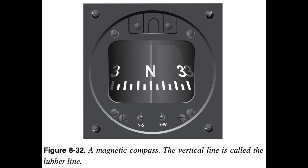The compass housing is entirely full of compass fluid. To prevent damage or leakage when the fluid expands and contracts with temperature changes, the rear of the compass case is sealed with a flexible diaphragm, or with a metal bellows in some compasses. The magnets align with the Earth's magnetic field and the pilot reads the direction on the scale opposite the lubber line. The pilot views the compass card from its backside.